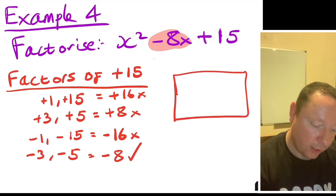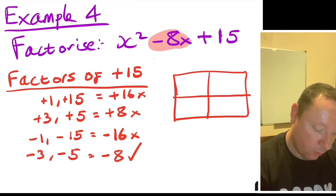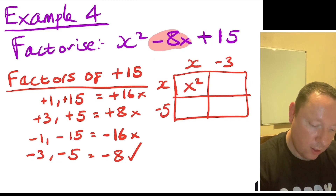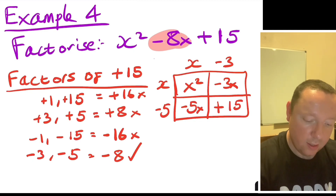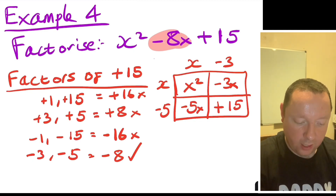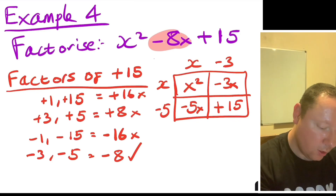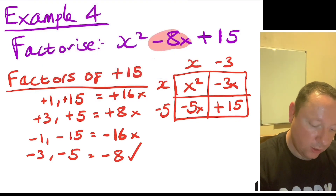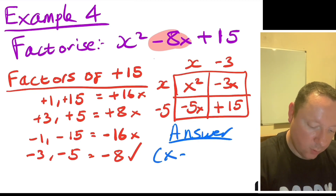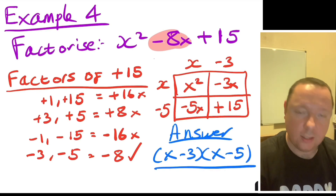Quick check with the rectangle: x minus 3 and x minus 5. That gives x squared, minus 3x, minus 5x, and plus 15 — because minus 5 times minus 3 is 15. And minus 3 minus 5 is minus 8, so it's correct. The final answer is x minus 3 times x minus 5, fully factorised as a double bracket.